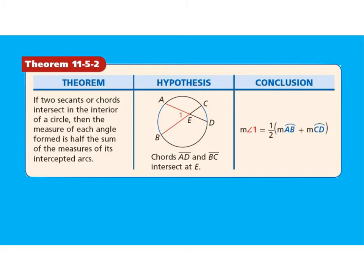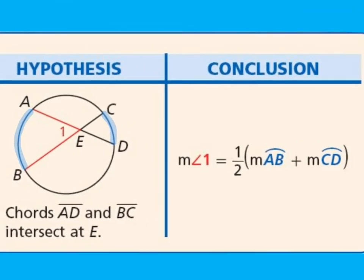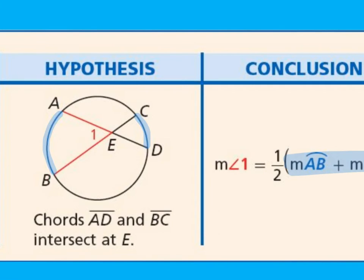Our next theorem states that if two secants or chords intersect in the interior of a circle, then the measure of each angle formed is half the sum of the measures of its intercepted arcs. With two chords that intersect in the middle of a circle, to find the measure of angle 1, we add the two intercepted arcs together and divide by 2, or multiply by one half.